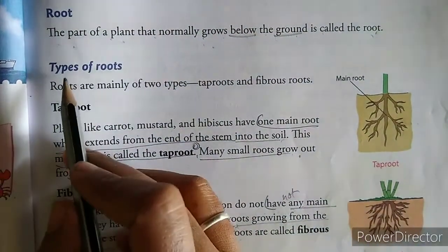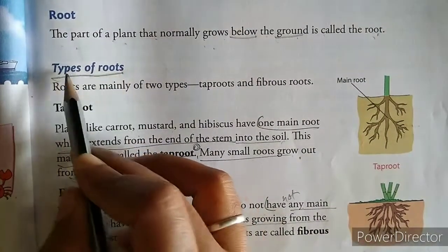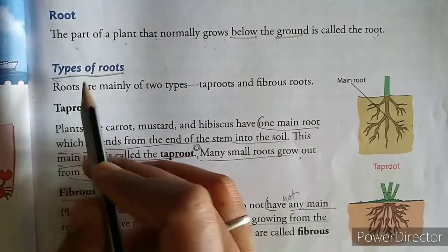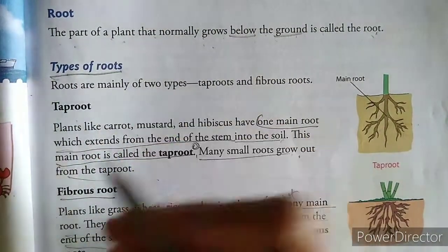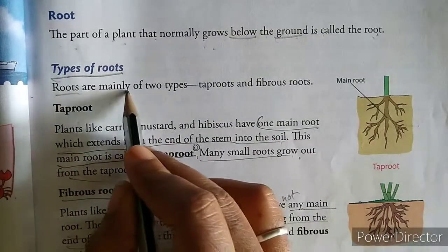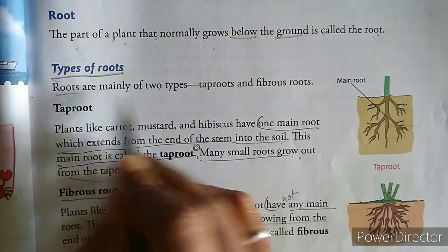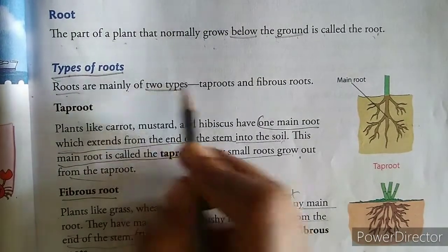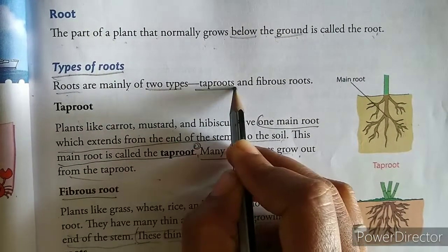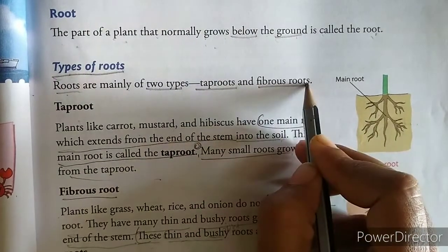Now we will discuss our next topic: types of root — root ke types. Root ke bhi do types hote hain. Roots are mainly of two types. First is tap root and second is fibrous root.